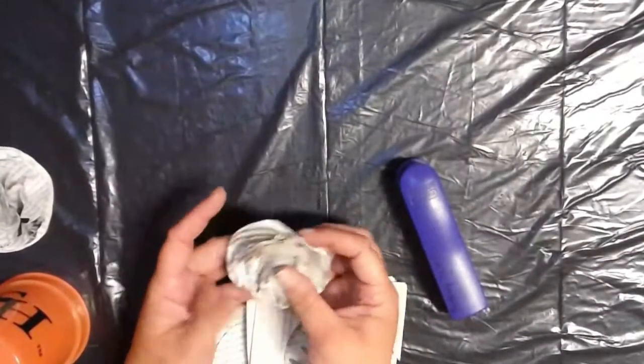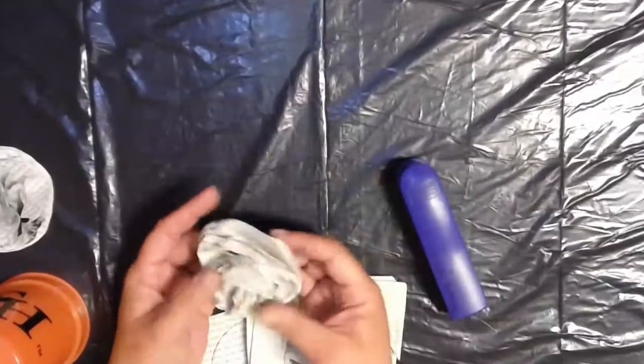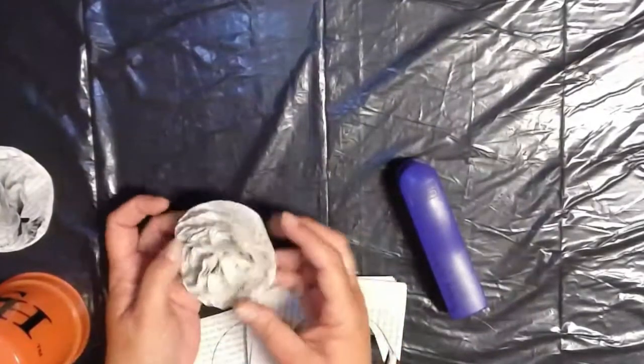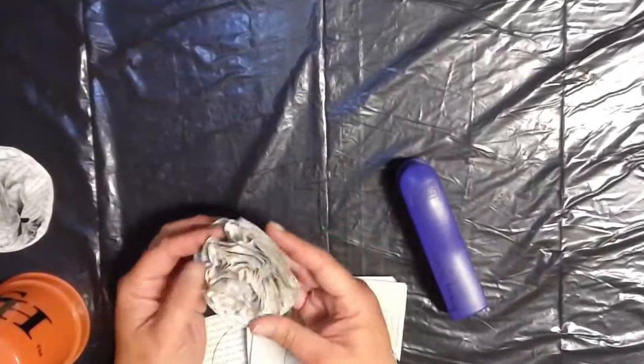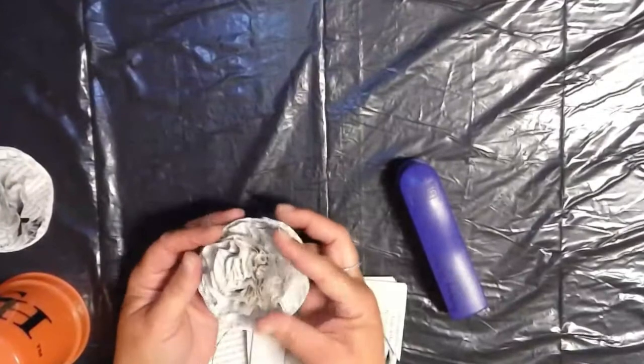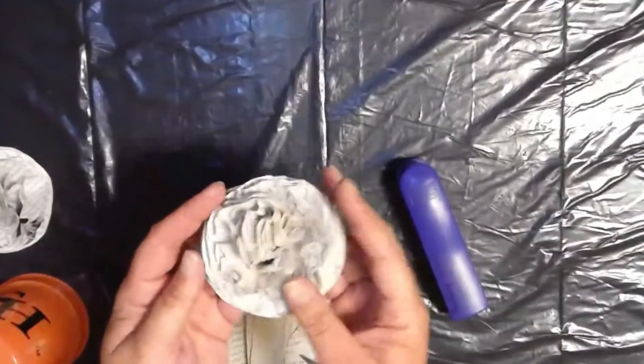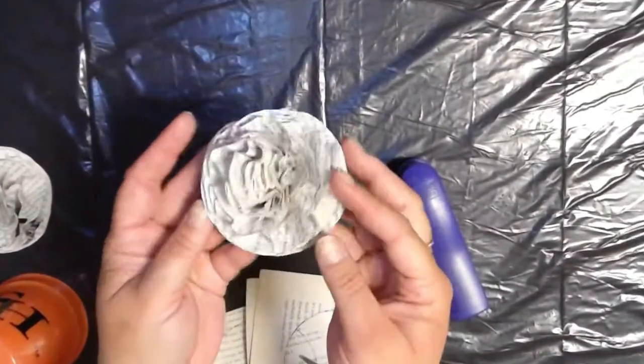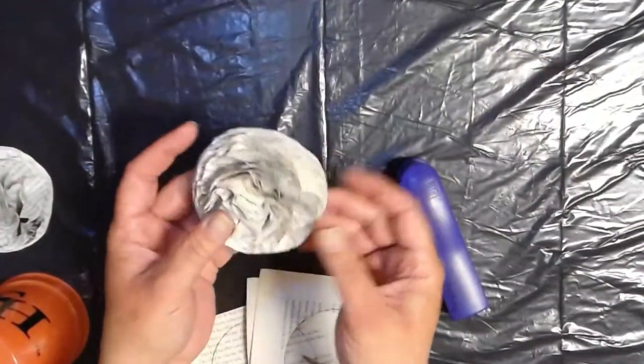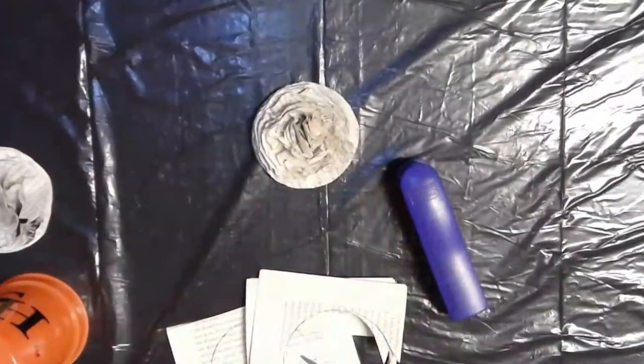And then I'm just going to slowly pull from the edges, fluff out my flower. Where all of those crinkles give you that kind of carnation look to it. And now I have a very cool little carnation out of a book page.